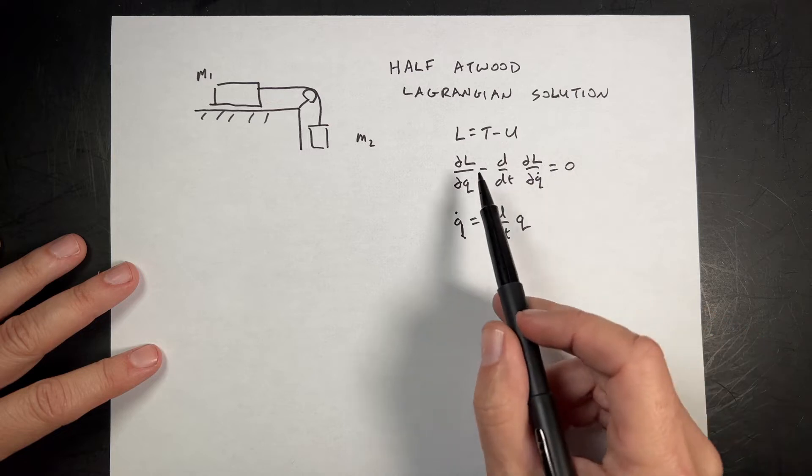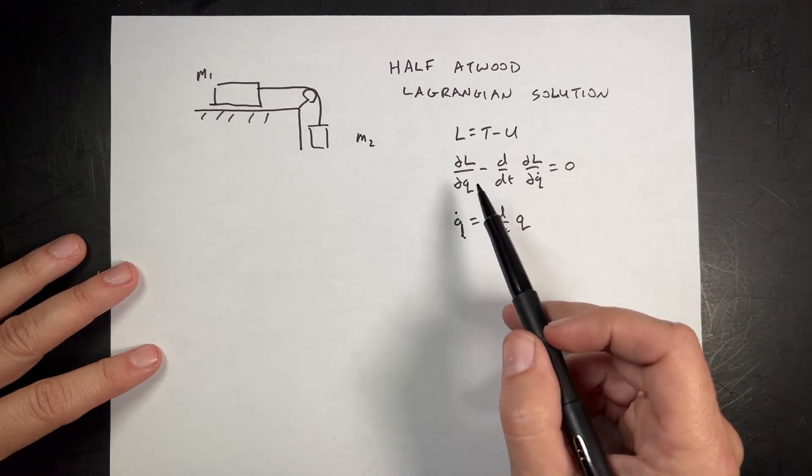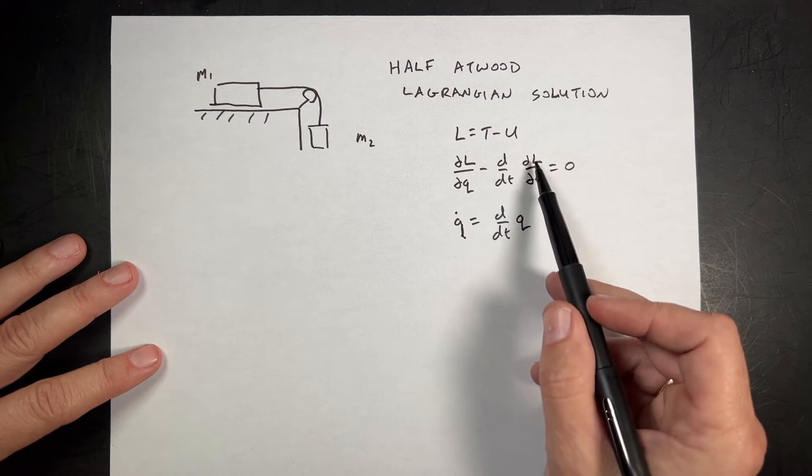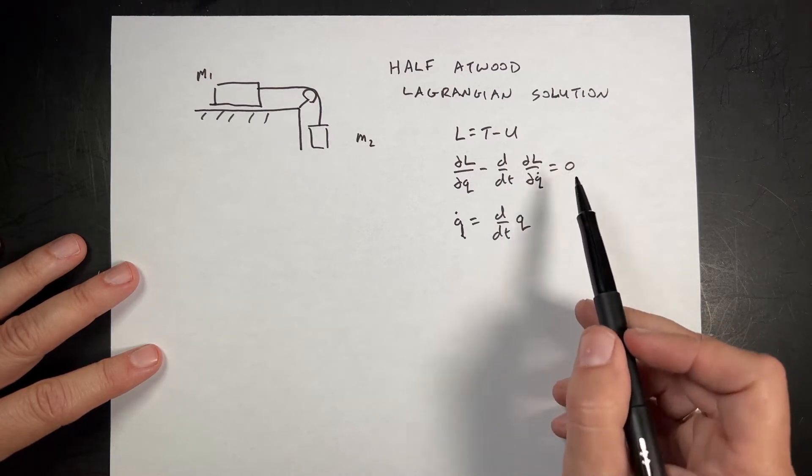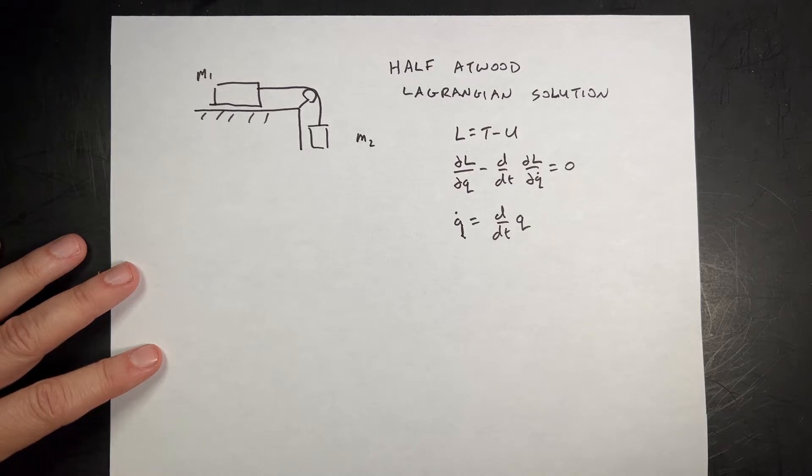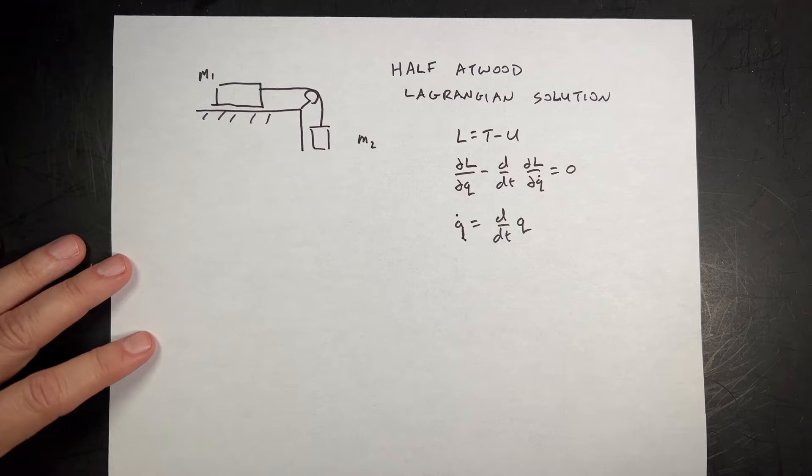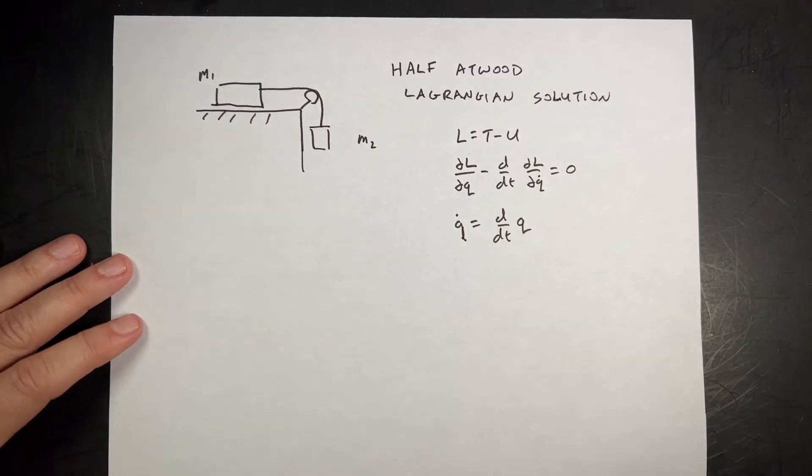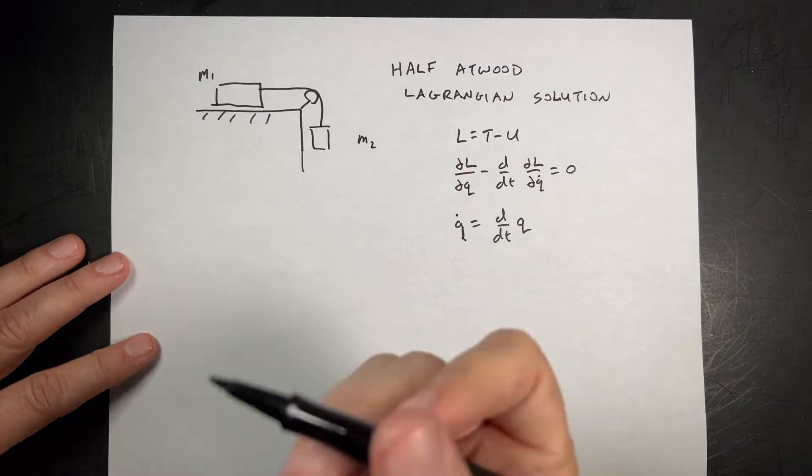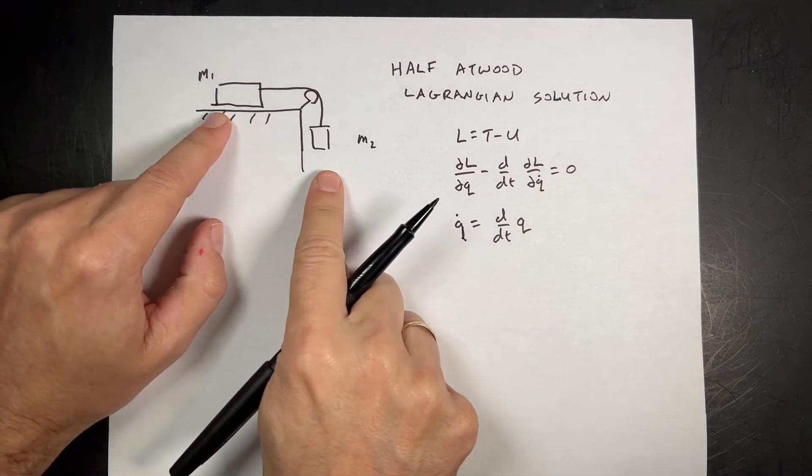The solution has to satisfy this: the partial of Lagrangian with respect to the variable Q minus the time derivative of the partial with respect to Q dot, where Q dot is the derivative with respect to time, is equal to zero. I have an explanation of Lagrangian mechanics, but I just want to solve this problem. The first thing we're going to do is define the system and pick coordinates. First we want to think about how many degrees of freedom.